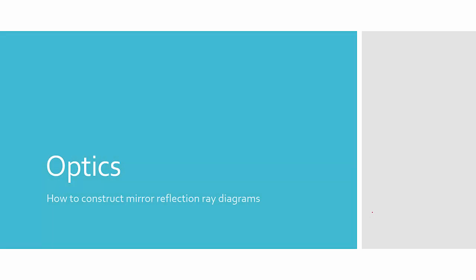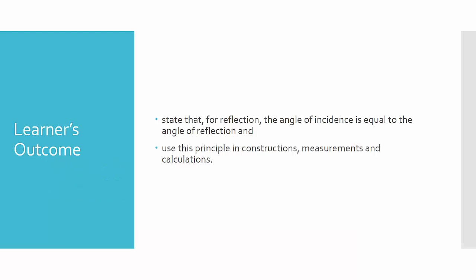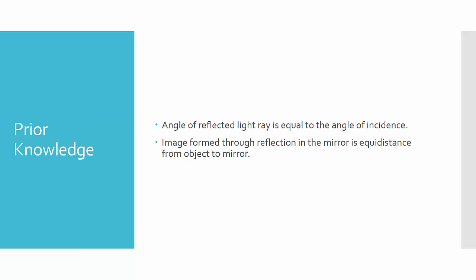In this lesson, we are going to learn how to construct various different ray diagrams for mirror reflections. These are the learners' outcomes. Some prior knowledge: you need to understand the angle of reflected light ray is equal to the angle of incidence, and the image formed through reflection in the mirror is of equidistance from the object to the mirror.